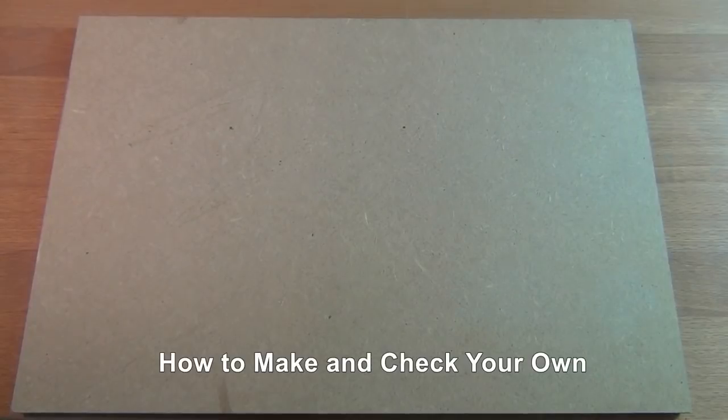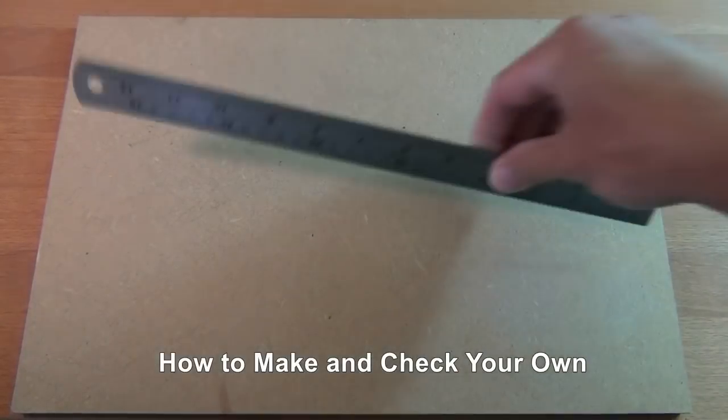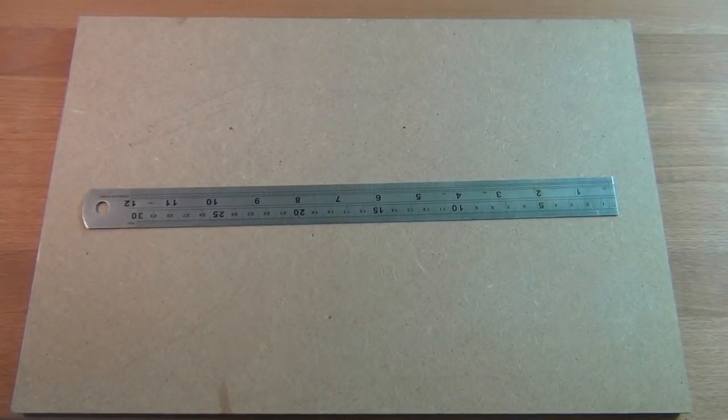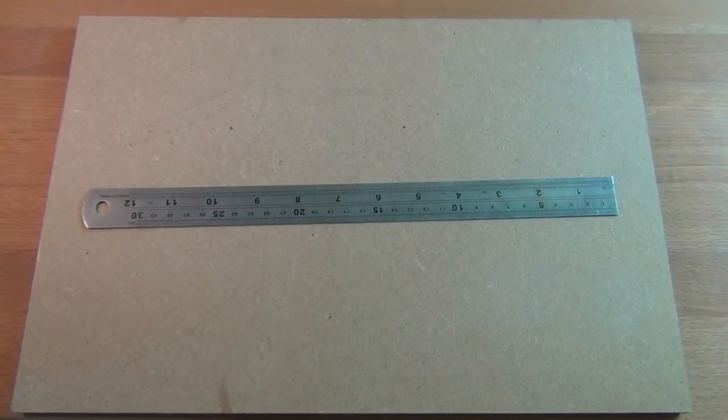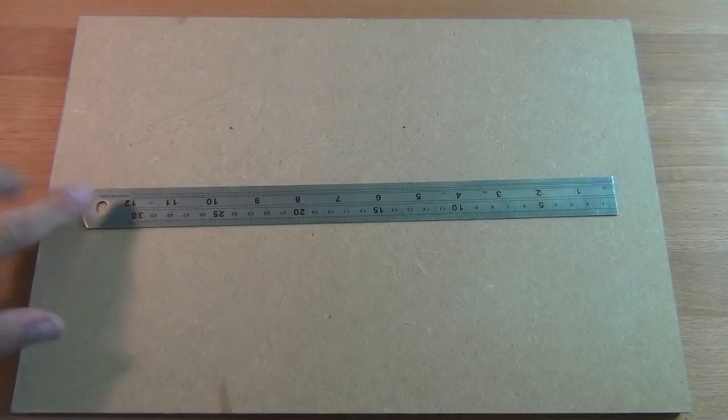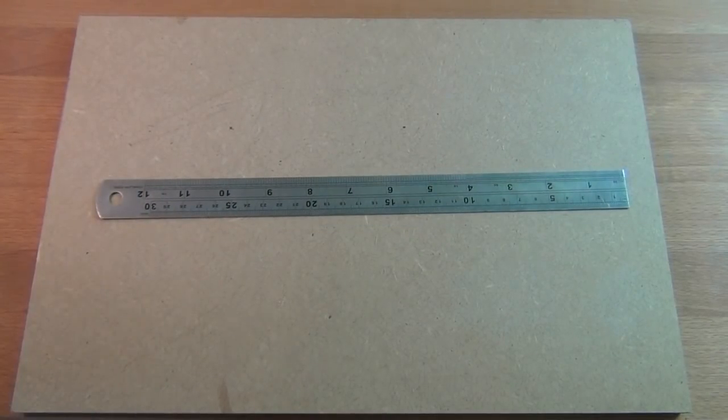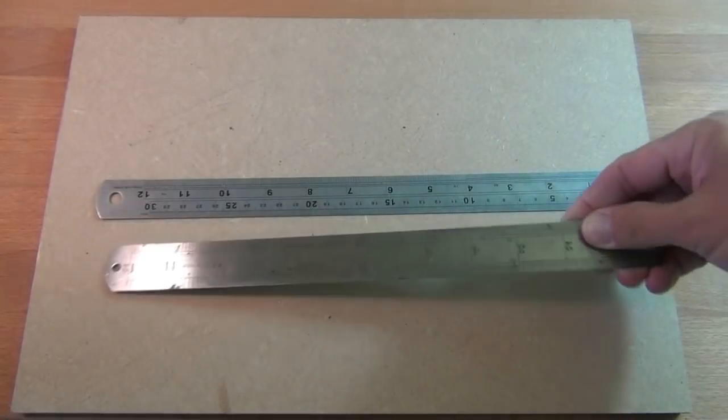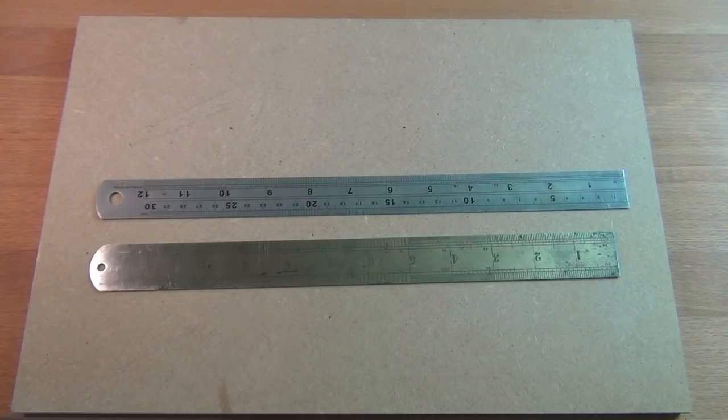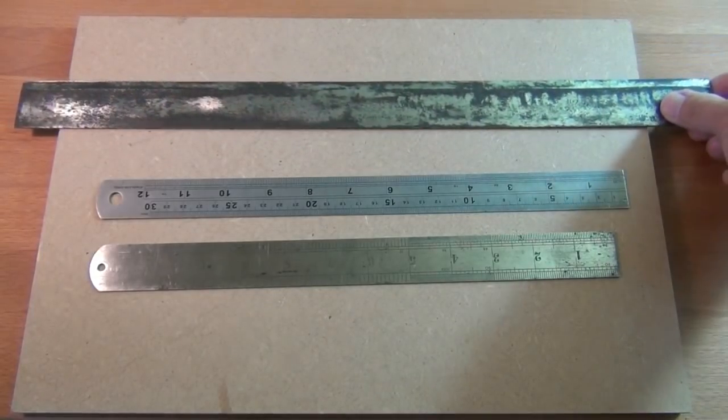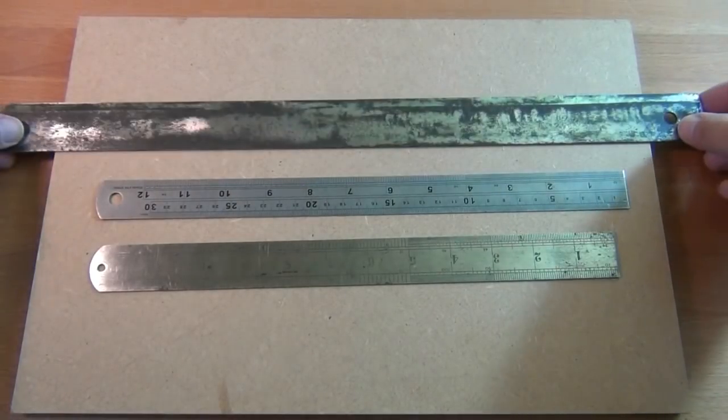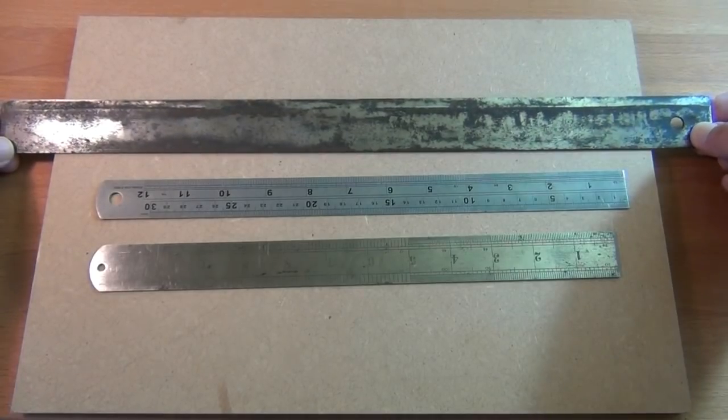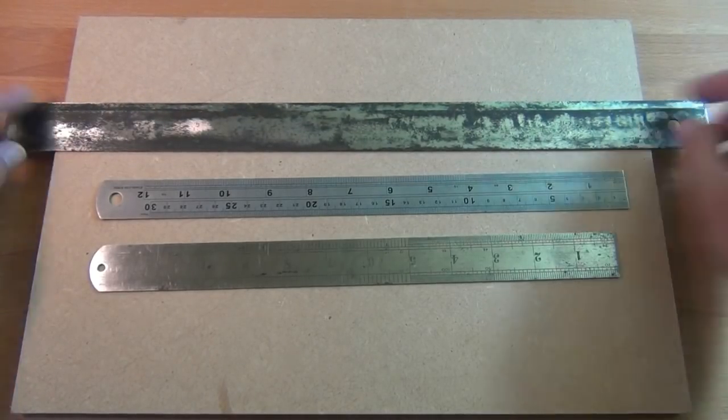So, what if you don't have a precision straight edge? How can you check that your steel rule that you use everyday is straight? Unfortunately, the best way of doing it is to not have one steel rule, to not have two steel rules, but to have either three steel rules or two steel rules and another steel. This is an old straight edge, it wasn't a precision one, but it's used for marking. It's got a bevel on the top.